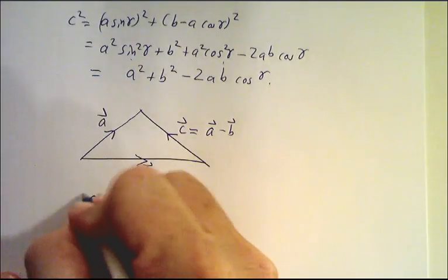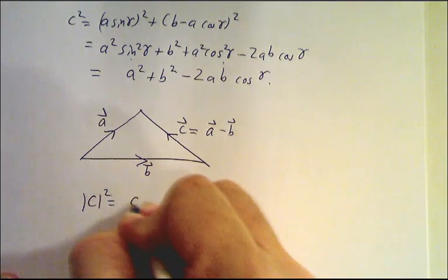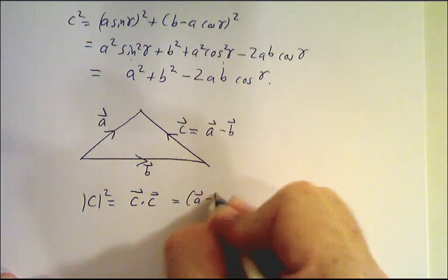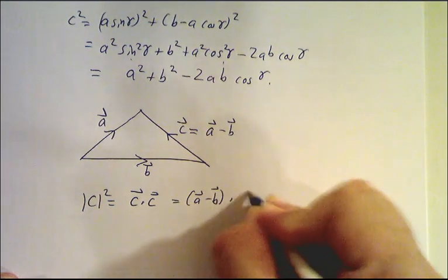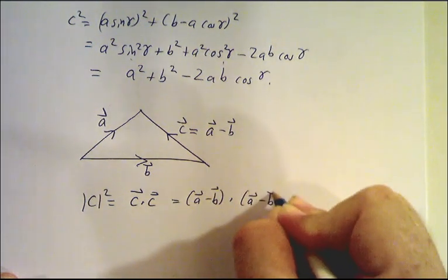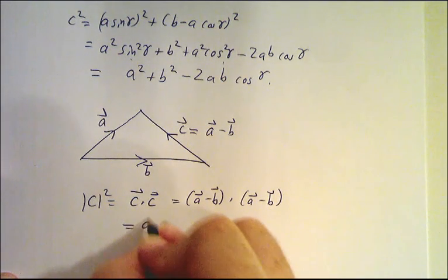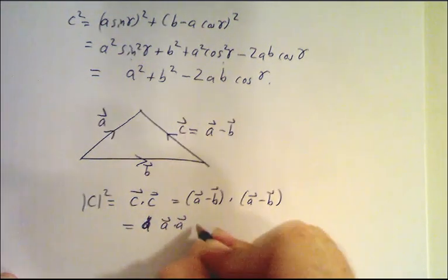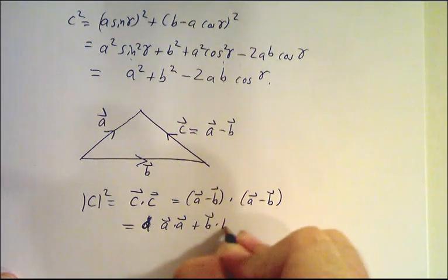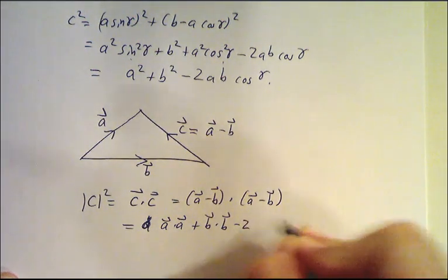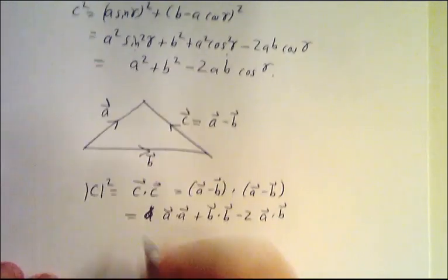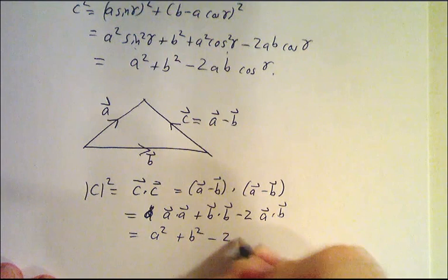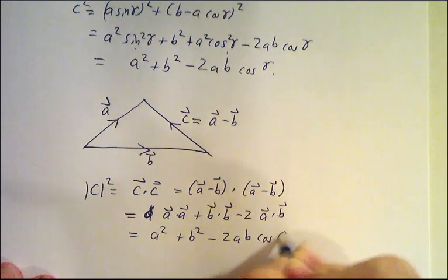So C squared is C dot C, which is A minus B dot A minus B, which is A dot A plus B dot B minus twice A dot B. And that's A squared plus B squared minus 2AB cos gamma.